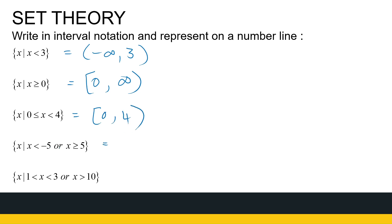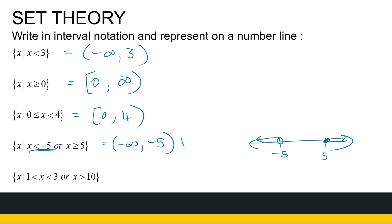For X less than minus 5, or X greater than or equal to 5, we need a number line. X less than minus 5 covers everything to the left of minus 5, and X ≥ 5 covers 5 and everything to the right. On the picture it's two separate parts, so we write it in two intervals using the union symbol: (-∞, -5) union [5, ∞). Five is included, and it goes all the way to infinity.